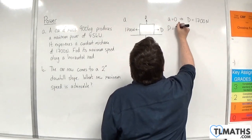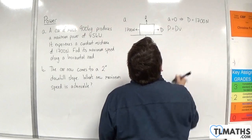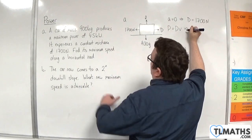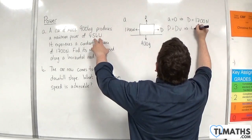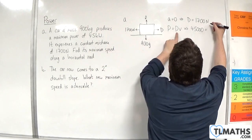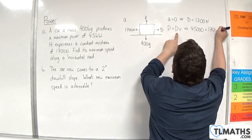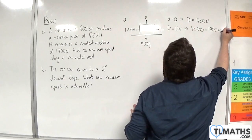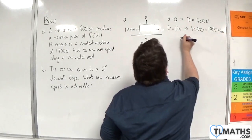Now, we know that the power is equal to the driving force times the velocity. So the power in this case is 45 kilowatts. So 45,000 watts is equal to D, which is 1,700, times by the velocity V. And the velocity here is the maximum velocity that I want to find.